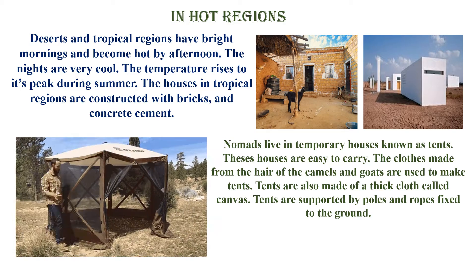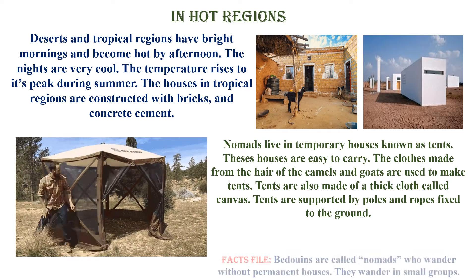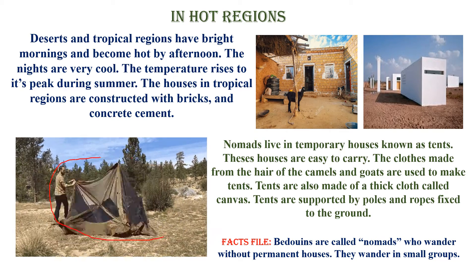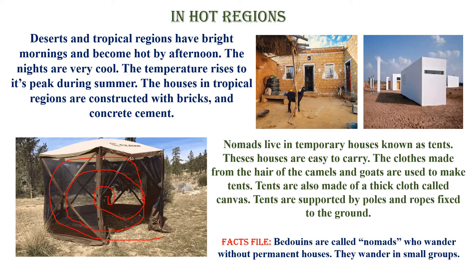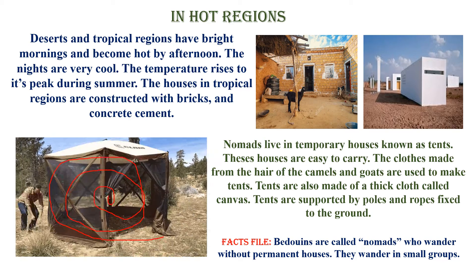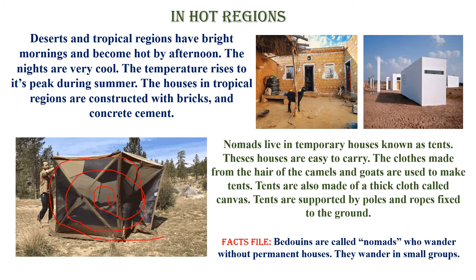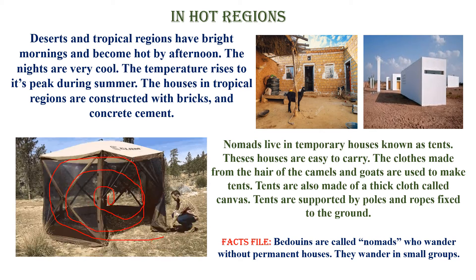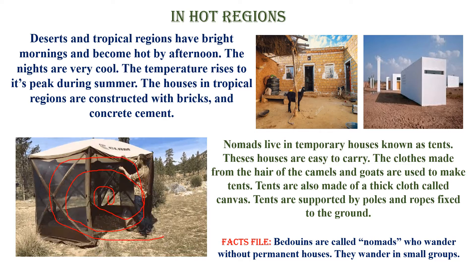Nomads live in temporary houses known as tents. These houses are very easy to carry. The cloth for tents is made from the hair of camels and goats. Tents are also made up of thick cloth called canvas. Tents are supported by poles and ropes fixed to the ground.